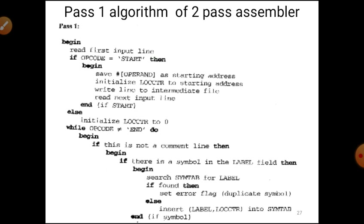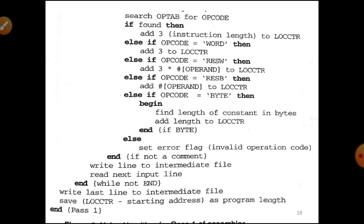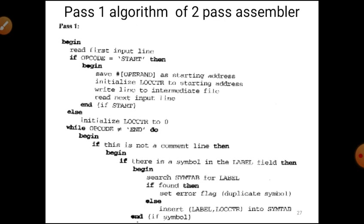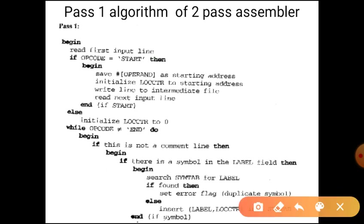Now we consider the algorithm for pass one and pass two — both are important. Pass one starts by reading the first line of the input source program and checks for a START directive. If there is a START, take the operand value and assign it to LOCCTR, write to the intermediate file, and read the next input. If there is no START, LOCCTR is assigned zero.